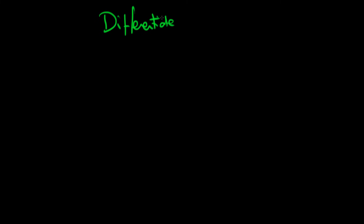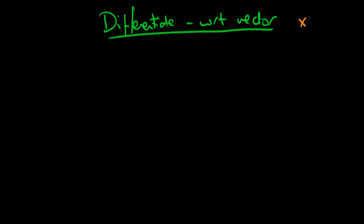In this video we're going to be continuing to talk about how we differentiate with respect to a vector. Remember last time we differentiated a scalar quantity x'a, where x' was a 1 by p vector and a was a p by 1 vector, so we got out a scalar. In this video we're similarly going to talk about differentiating a scalar quantity, but specifically something in quadratic form, or in matrix notation of quadratic form.